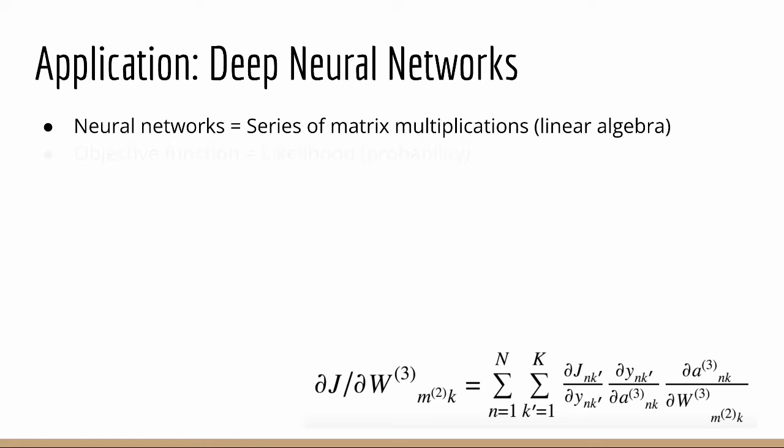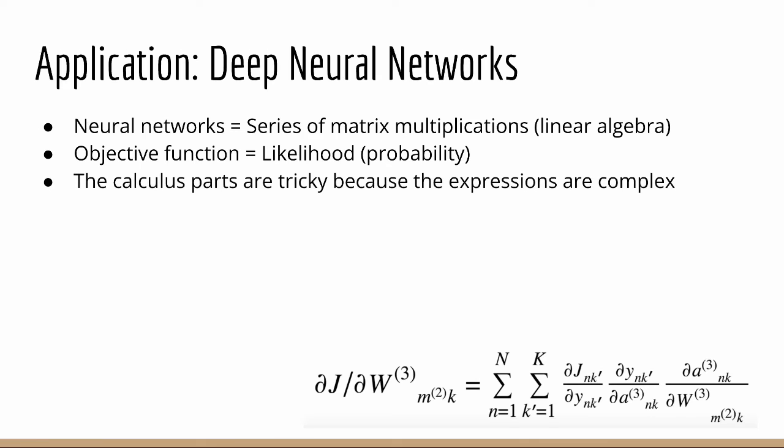The objective function to train a neural network is again based on the probabilistic quantity known as the likelihood. Training a neural network is tricky because the functional form of a neural network is very complicated, and there are many terms. As such, it's helpful to break it down recursively, and this requires you to do calculus, specifically differentiation.